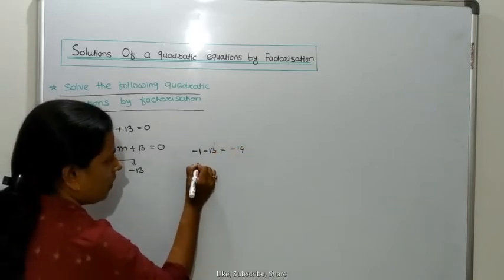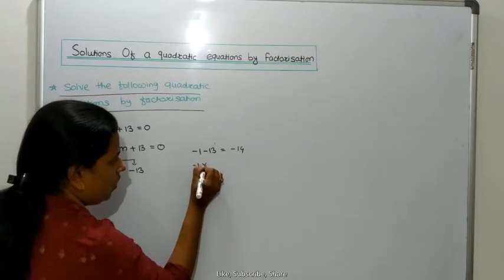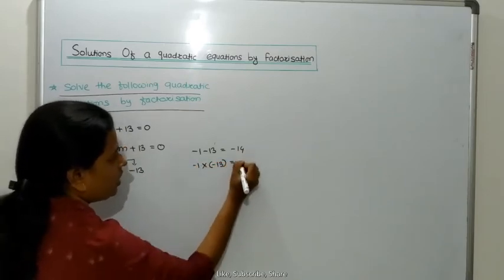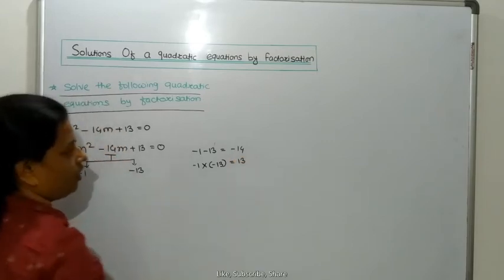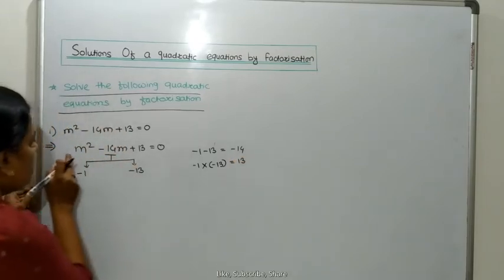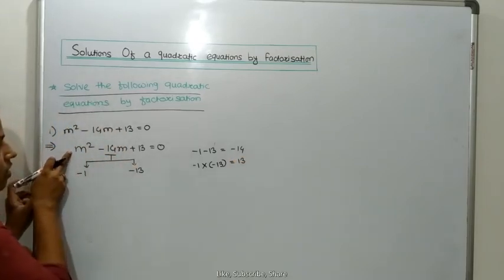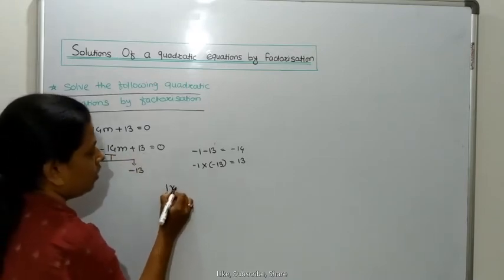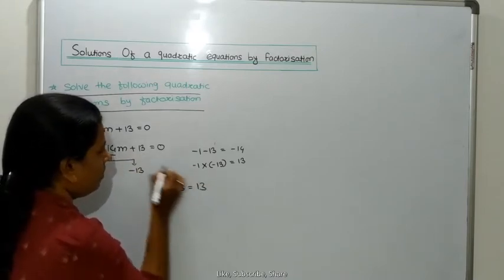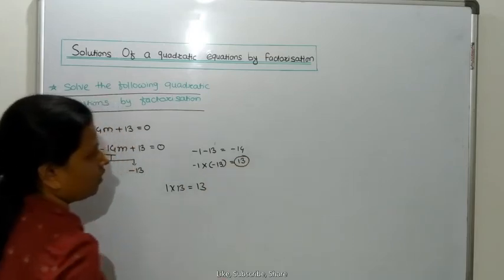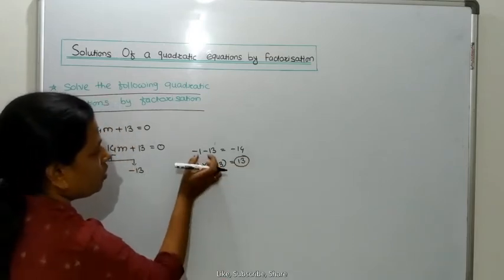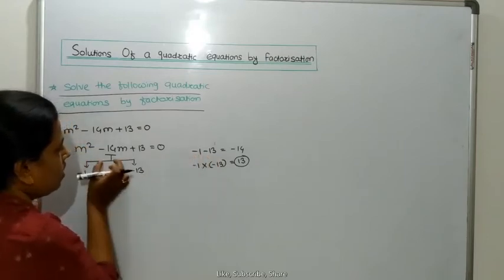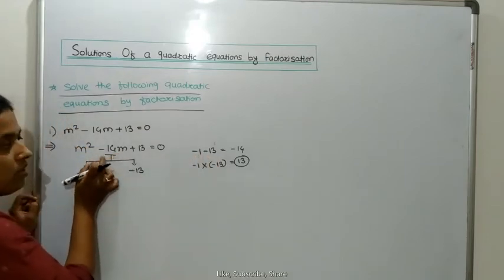When we multiply minus 1 into minus 13, what is the result? That is plus 13. The value of A is 1, so 1 into 13 is 13. That means we have to get 13 itself. These two numbers, minus 1 and minus 13, satisfy the criteria when we factorize.